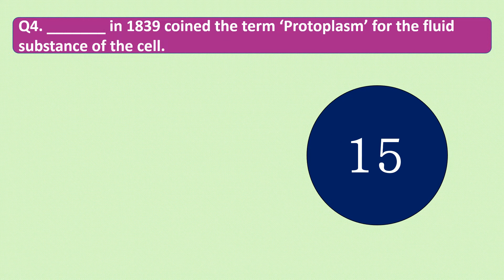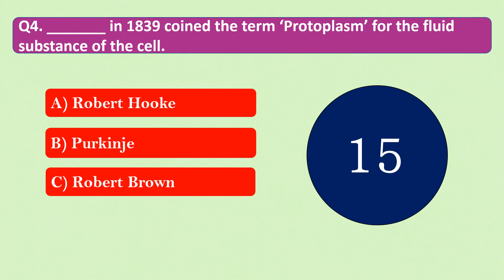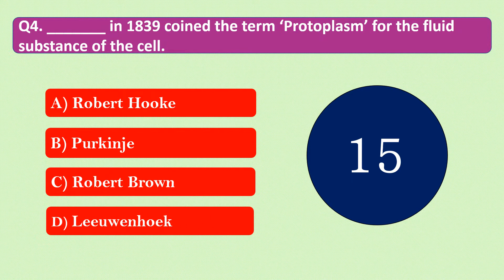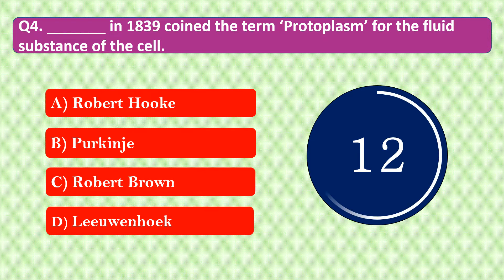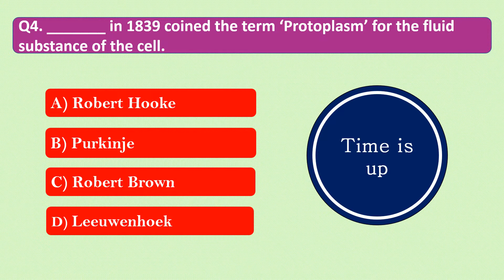Question number 4: Dash in 1839 coined the term protoplasm for the fluid substance of the cell. The options are A. Robert Hooke, B. Purkinje, C. Robert Brown, or D. Leeuwenhoek. The right answer is option B: Purkinje. Purkinje in 1839 coined the term protoplasm for the fluid substance of the cell.